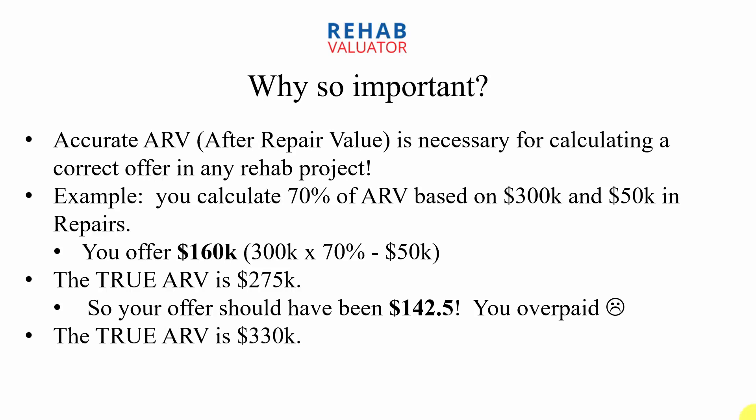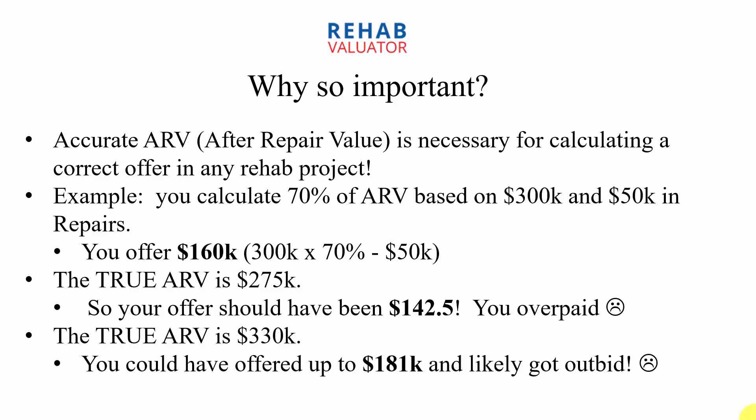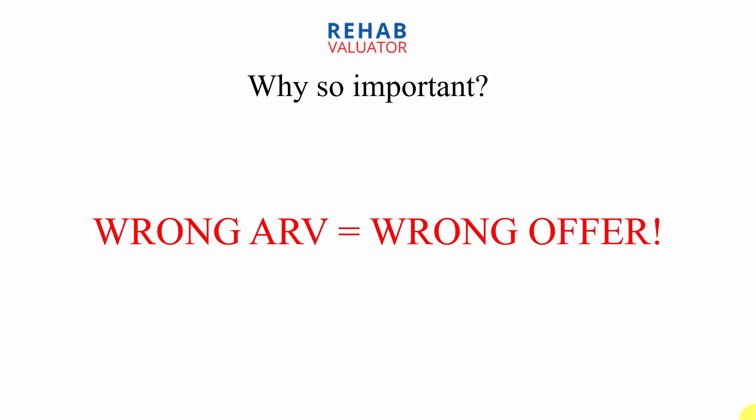Or let's assume the true after repair value is actually higher — it's $330,000. So you could have offered up to $181,000. We take $330,000, multiply it by 70%, and subtract the repairs necessary. In a competitive market like ours, you're likely going to get outbid for that property. You should have offered more. So everything starts with ARV. You need a way to calculate it accurately and preferably quickly, because hopefully you're looking at a lot of potential leads. Wrong ARV equals wrong offer.